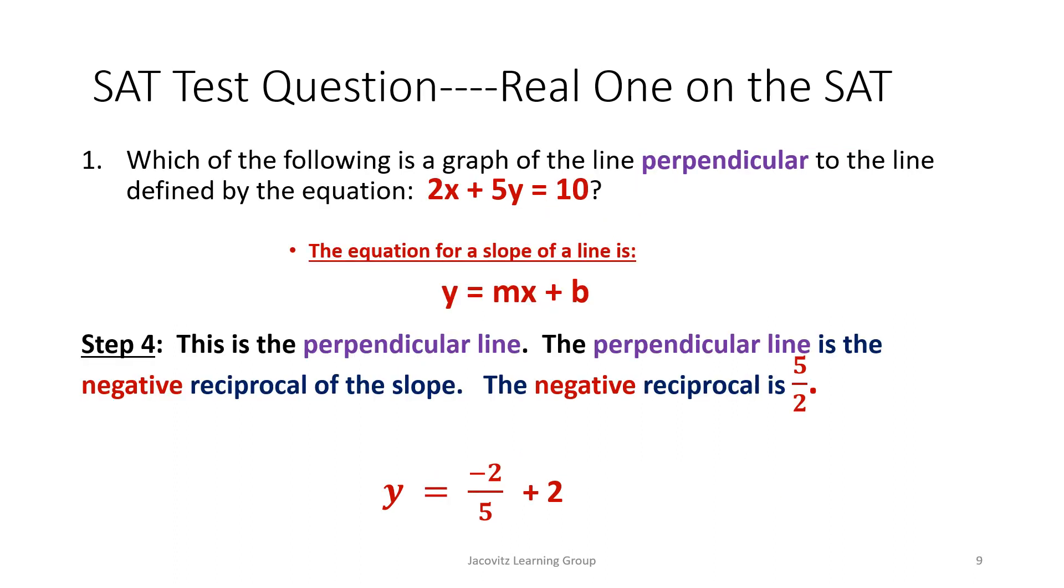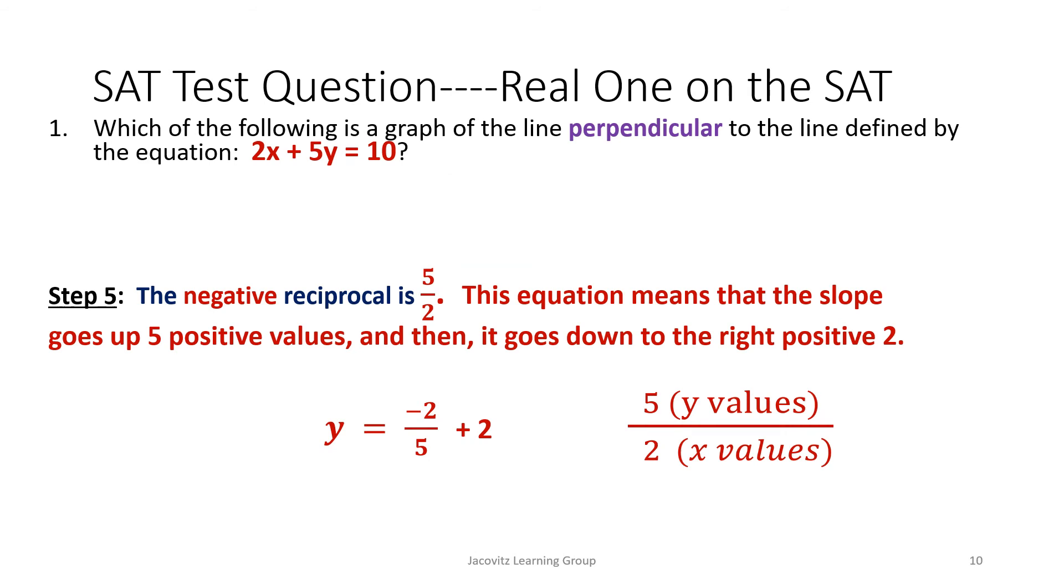That's your negative reciprocal. It asks you which graph is it? Now whenever you're doing this, you can stop looking at this as a slope right now. Remember, when you want to do change in slope, you go y2 - y1 over x2 - x1.